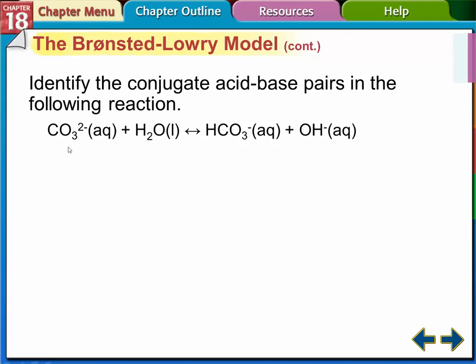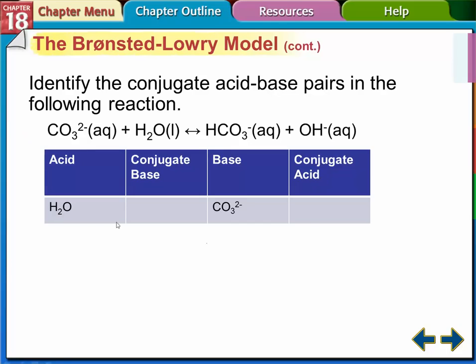In the carbonate example, the carbonate ion gains a hydrogen — so it's a hydrogen ion acceptor, making it the base. The water gave up a hydrogen, so water is the acid. We shouldn't assume the first substance is always the acid. The conjugate base is what the water became — the OH ion. The conjugate acid is what the carbonate became — HCO3-minus.